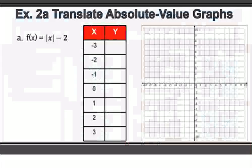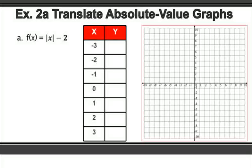Now let's practice graphing some of these — we need to translate the absolute value graphs. Here I give you a table; you can choose any numbers. I choose the smallest numbers: 0, 1, negative 1, 2, negative 2, 3, negative 3. I just plug these x values in. The absolute value of negative 3 is 3; 3 minus 2 is 1. Absolute value of negative 2 is 2; 2 minus 2 is 0. Absolute value of negative 1 is 1; 1 minus 2 is negative 1.